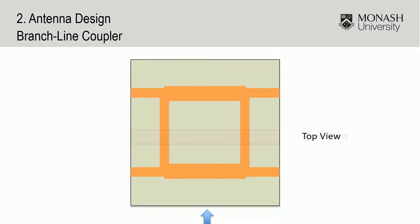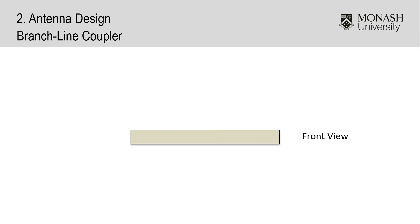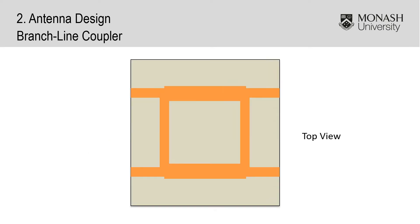Taking a look from the front view, the coupler is an FR4 substrate with a ground plane and a conductor on top. The conductor can be cut away to reveal the coupler shape as seen from the top view.